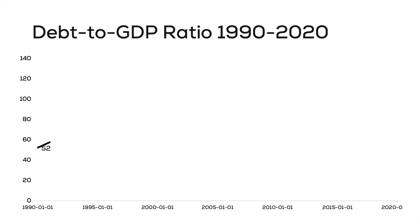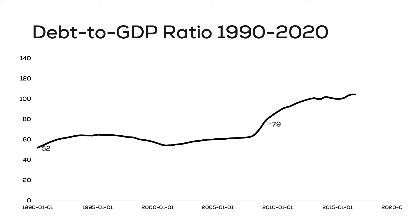Instead of looking at total debt numbers, I like to look at the debt-to-GDP ratio because that takes government size and the overall economy into consideration. Here's the US debt-to-GDP since 1990: in 1990 the ratio was 52%, it marginally increased until the financial crisis, reaching 79% in 2010, and by the first quarter of 2020 it increased to 122% — meaning we owe more than what the US produces in an entire year.